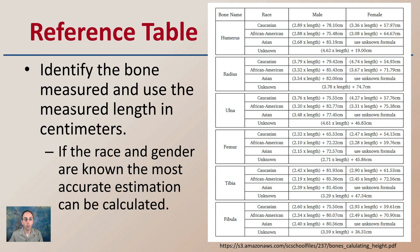To use the reference table, identify the bone you measured — the humerus, the radius, the ulna, the femur, the tibia, or the fibula — and use the measured length in centimeters. If the race or gender is known when looking at skeletal remains, the most accurate estimation can be calculated. You can see equations for Caucasian, African-American, Asian, or unknown, and whether it's male or female. There are different equations to apply, which will provide an estimation of the individual's height based on only one bone.